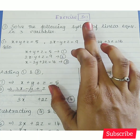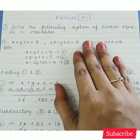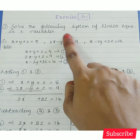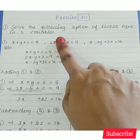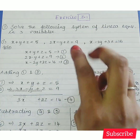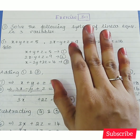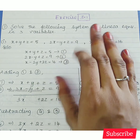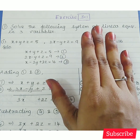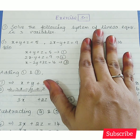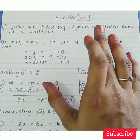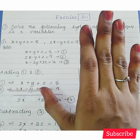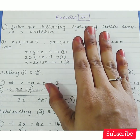Now we will see Exercise 3.1. The first two problems are here. Solve the following system of linear equations in three variables x, y, z. The second problem asks for the nature of the solutions.